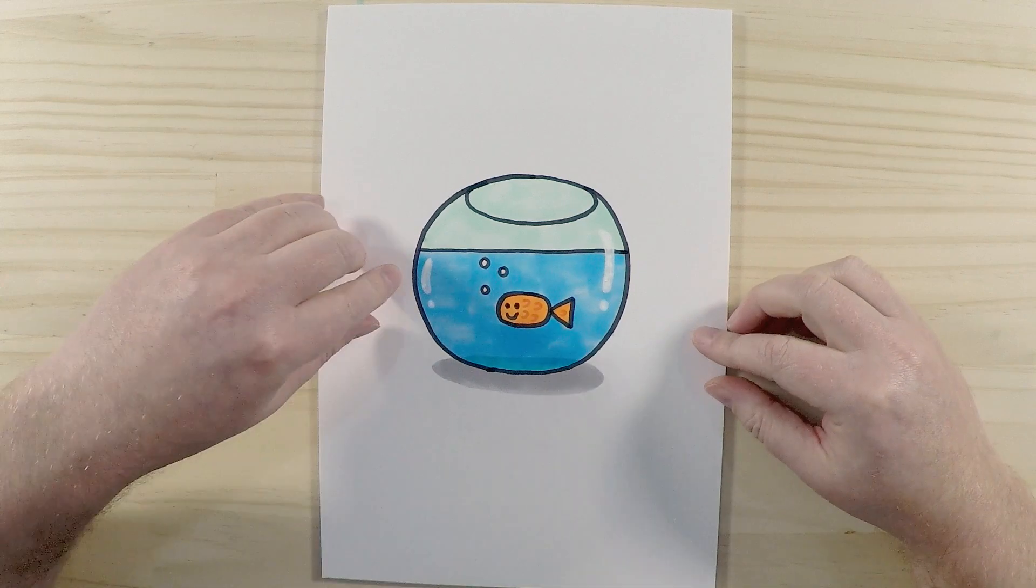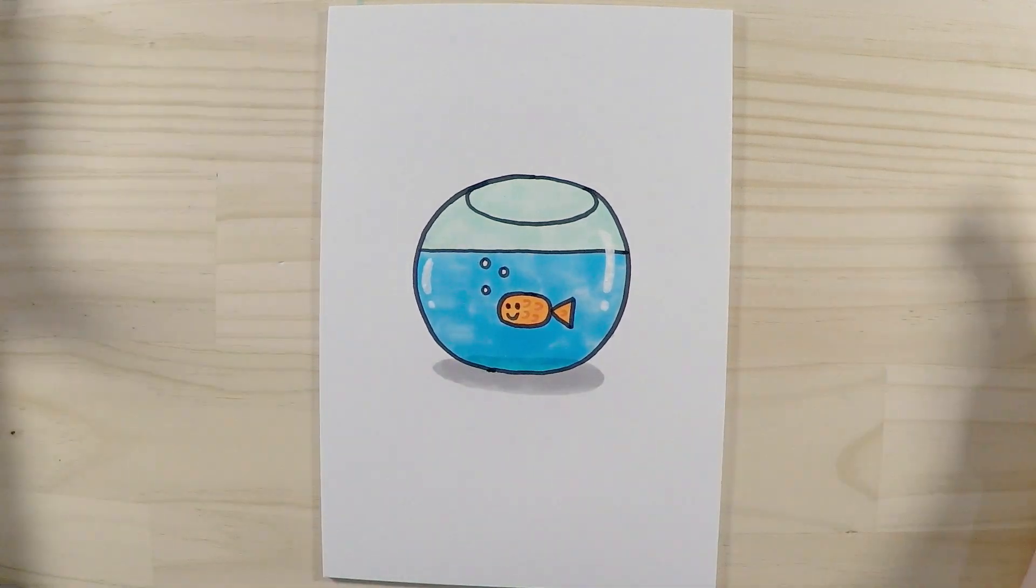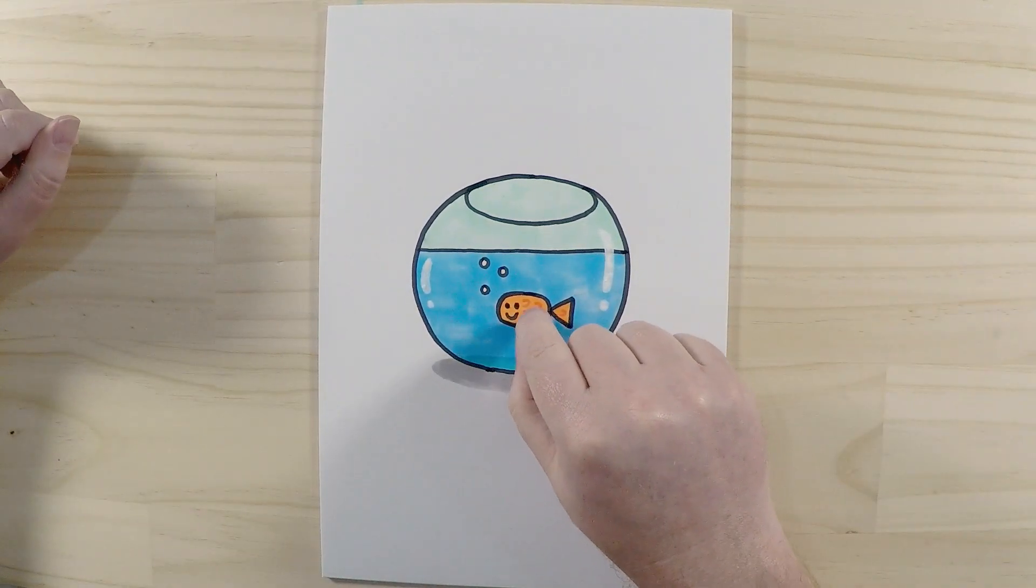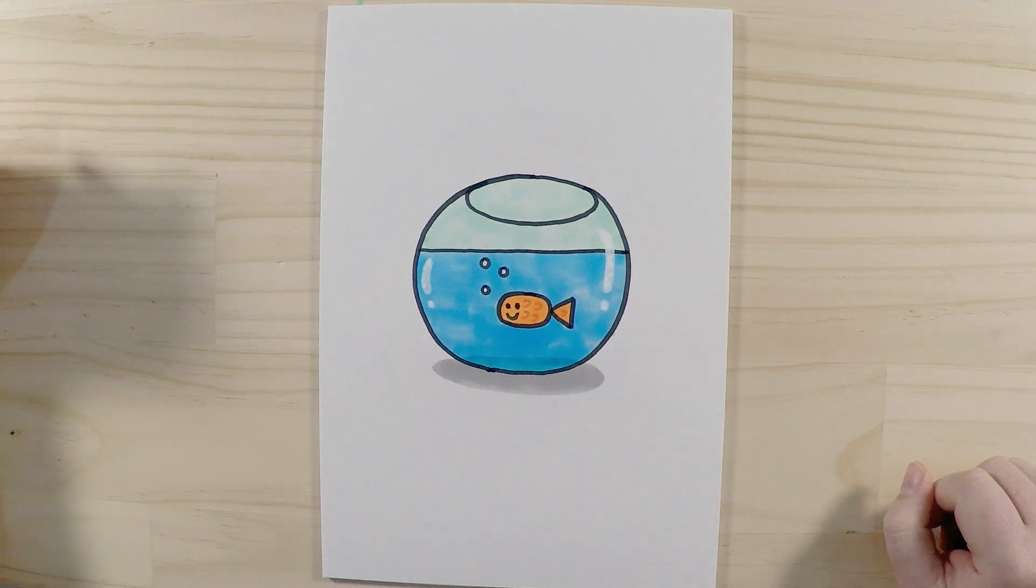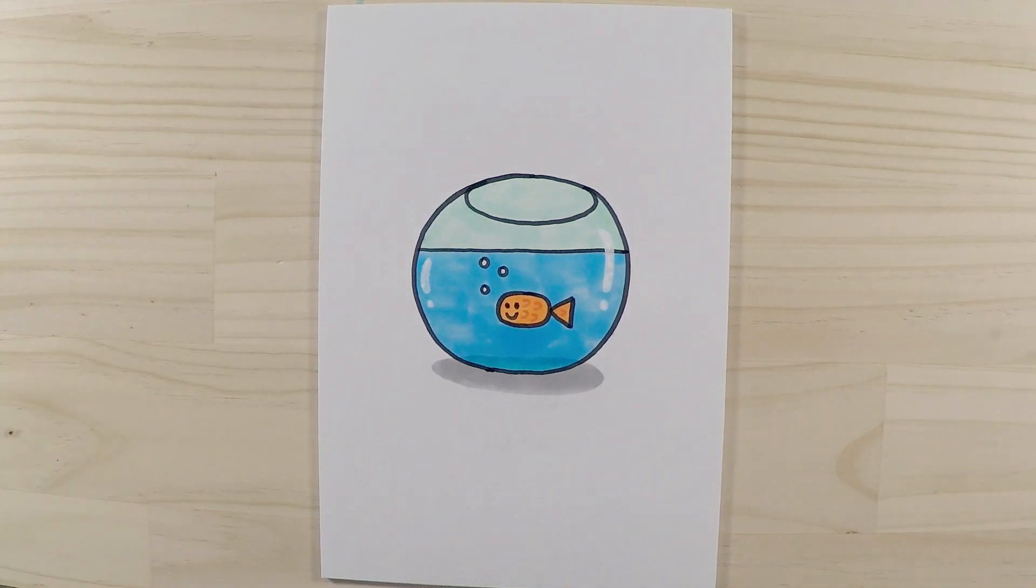What I've done is I've just added some highlights or reflections on the glass. Just makes it stand out a little bit. And I've just added a few little scales on details on the body as well. Just to make it look a bit more interesting.